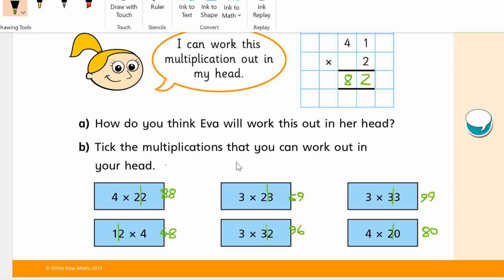So if we do it as a long multiplication, if I rub out these answers, they're all correct. I'm just showing you how you're doing it in your brain. You're doing 22 times 4. So 4 times 2 is 8. 4 times 2 is 8. Okay. Good.